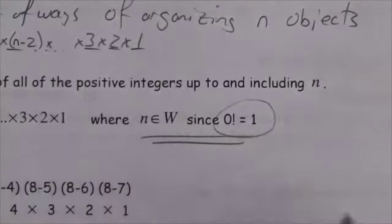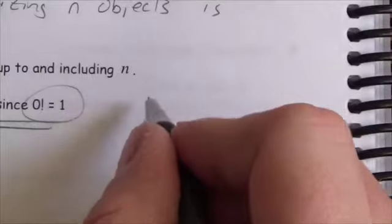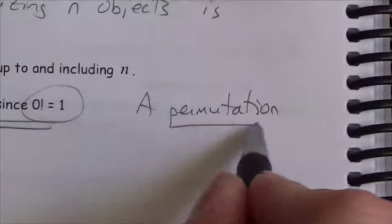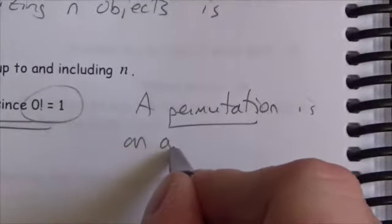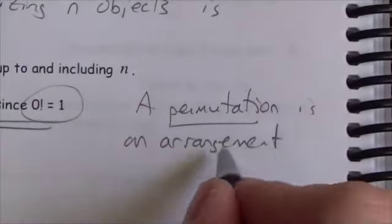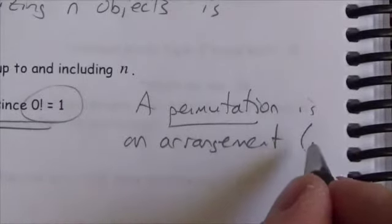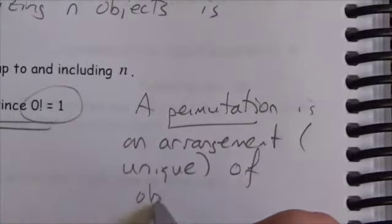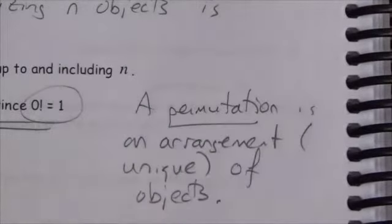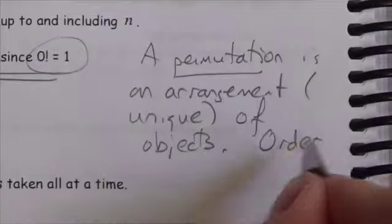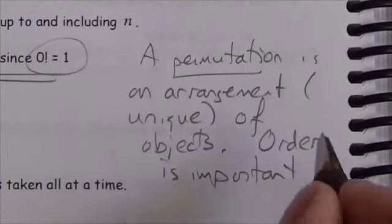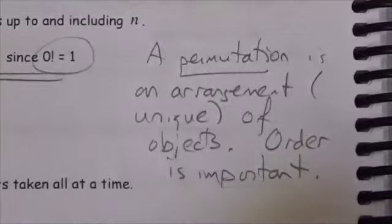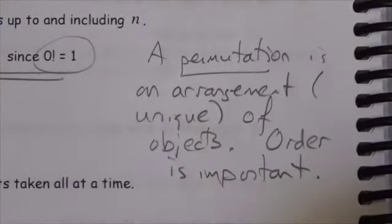When we talk about the number of ways of organizing objects, this is called a permutation. A permutation is a unique arrangement of objects. Order is important — once you change the order of the objects, you've created a brand new permutation.